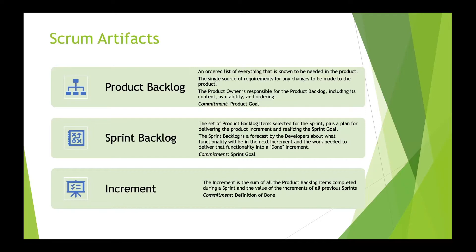From an artifact perspective, the product backlog can be thought of as the single source of requirements defining value to the stakeholders. It is owned and managed by the product owner, ordered by priority, and represents everything that is known to be needed in the product. The sprint backlog is a subset of the product backlog. It represents the plan for the current sprint, owned by the developers, and is a forecast of what will be delivered at the end of the sprint, defining the work needed to deliver the functionality.